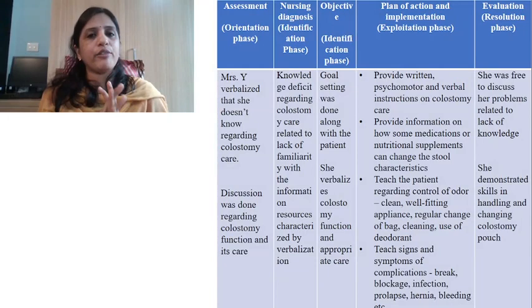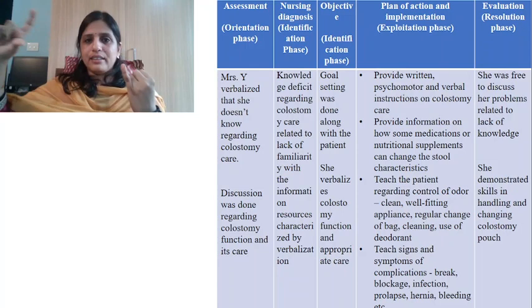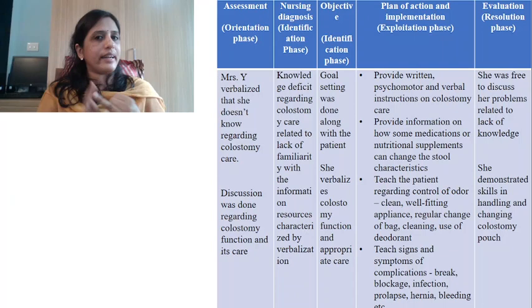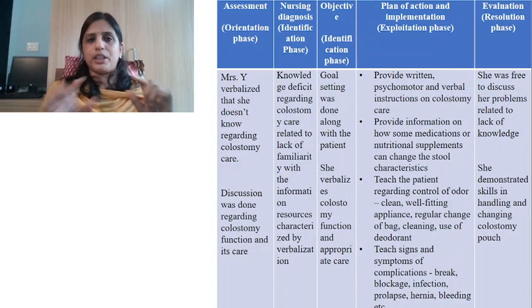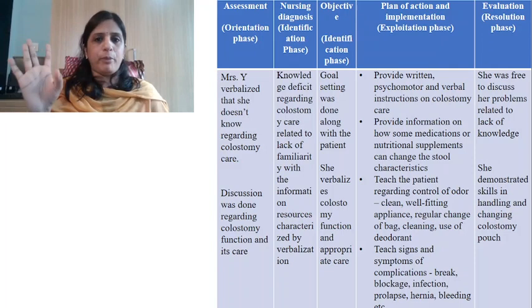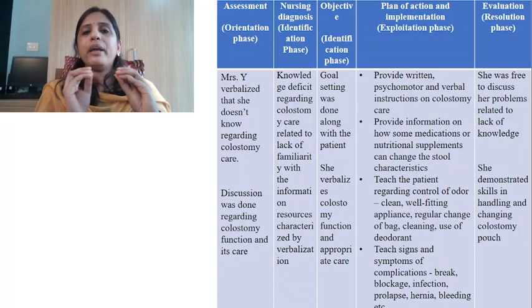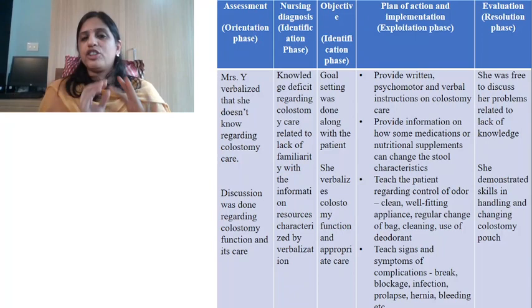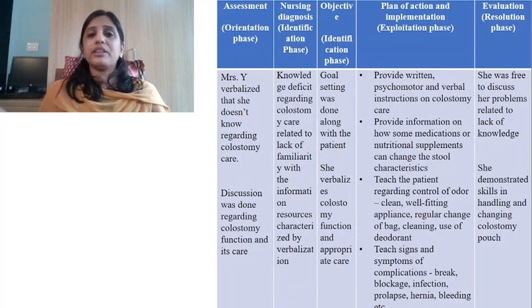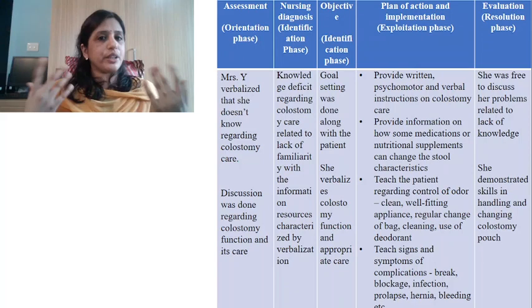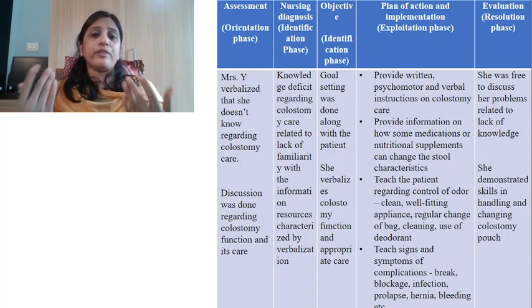As students, we should be clear about the difference in writing a care plan for Peplau. In the table heading, write: assessment is orientation; nursing diagnosis and objective is identification; plan of action and implementation is exploitation; evaluation is resolution. In assessment, there is no separate heading for subjective data or objective data. In the objective, write that goal setting was done along with the patient — making it clear to the examiner that mutual goal setting was done. Plan of action and implementation remain the same. In evaluation, write one sentence about whether she was free to discuss the problem, and then what improvement was seen in the patient.